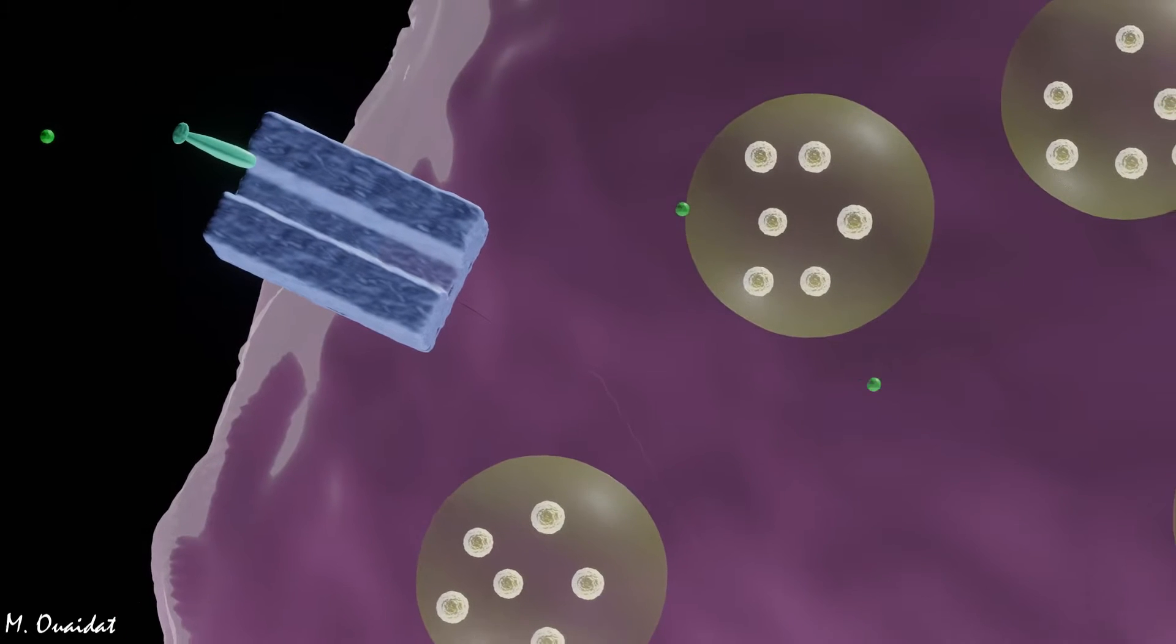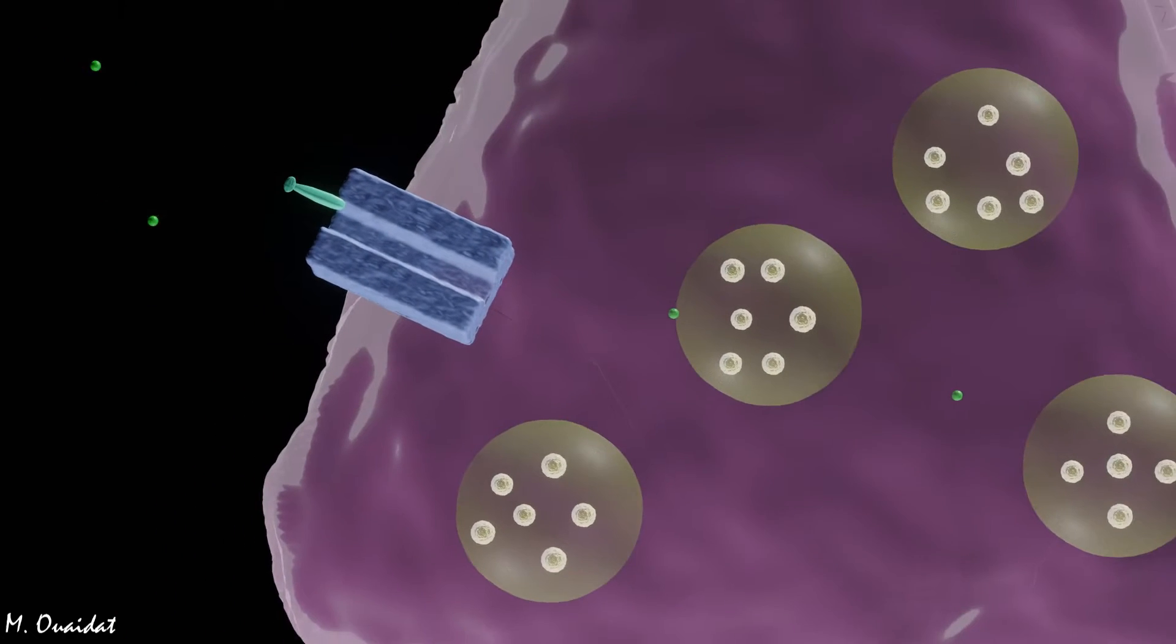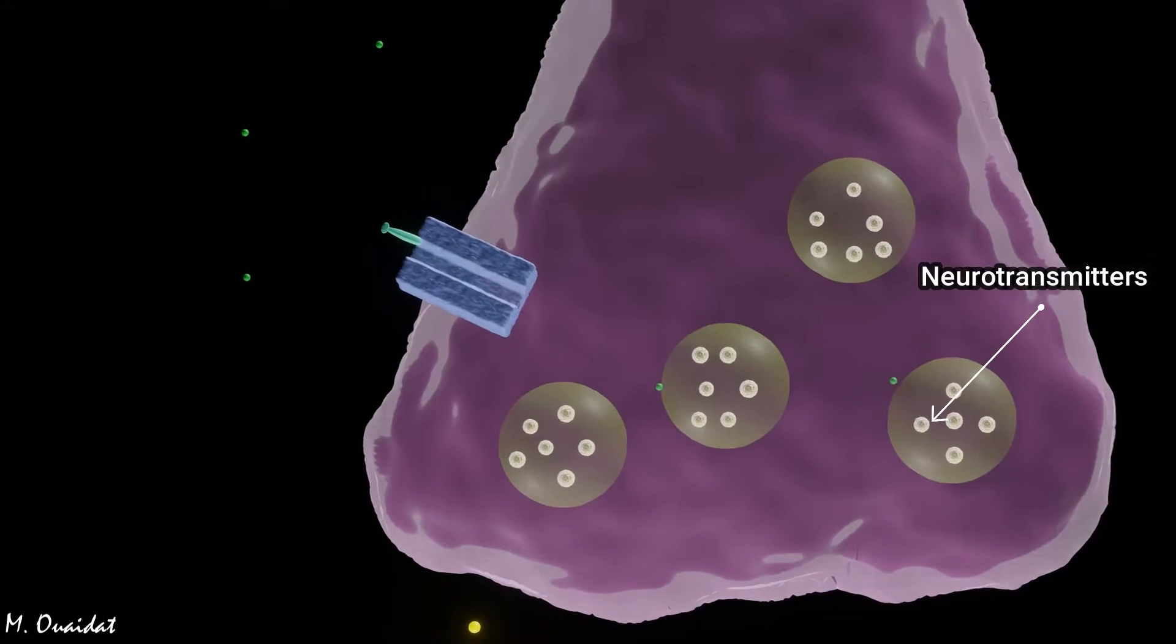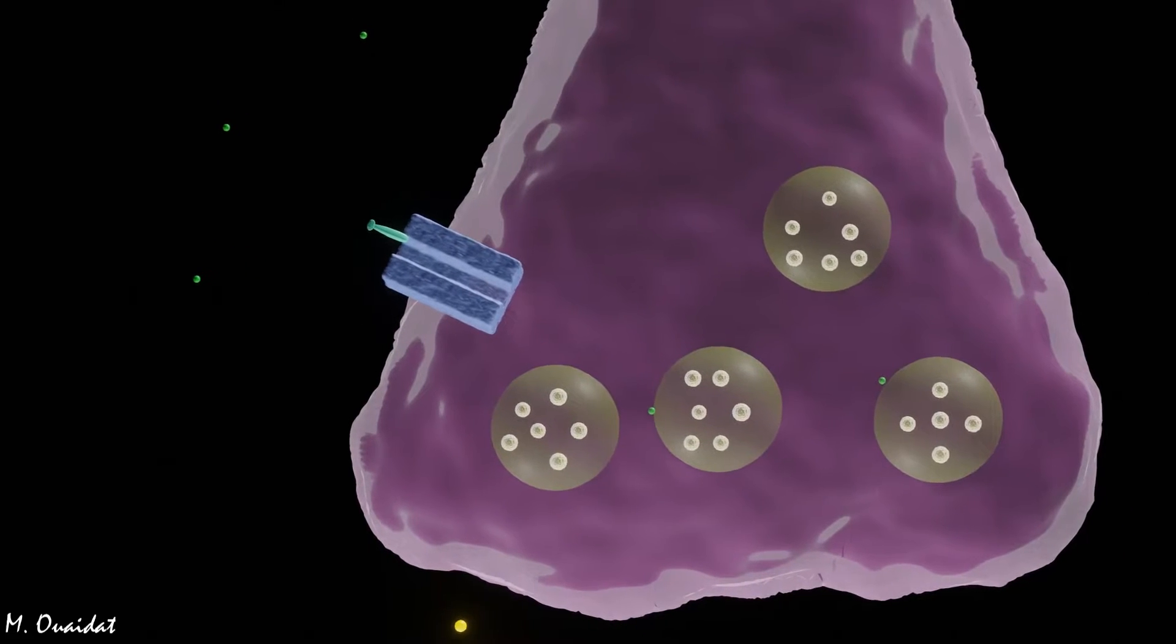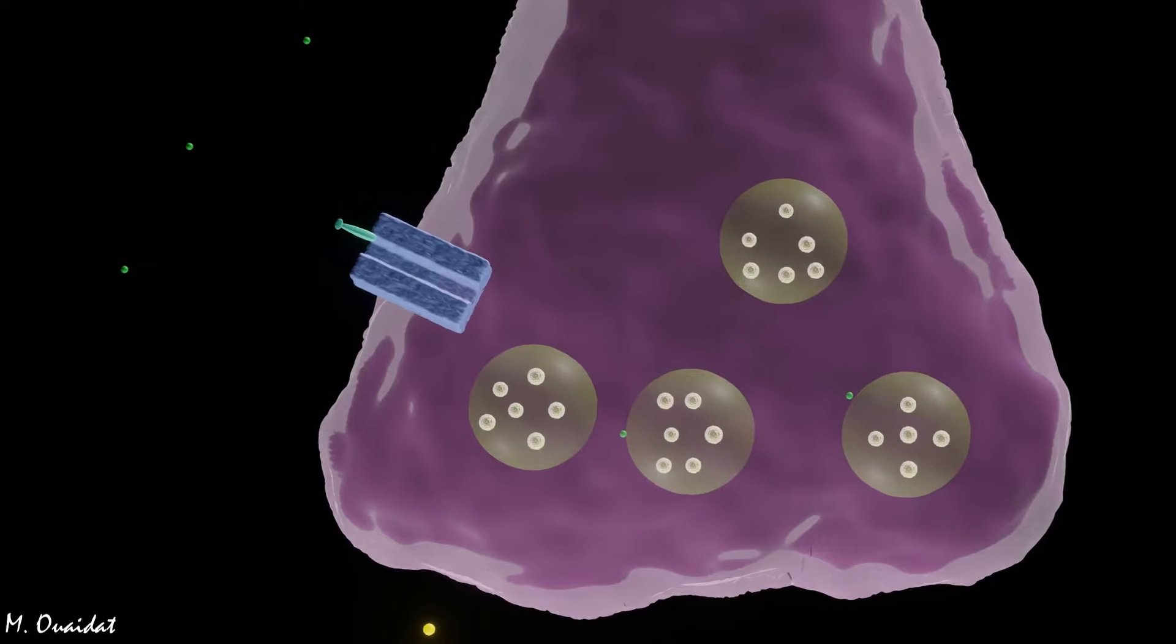When calcium binds to the vesicles which contain chemical secretions called neurotransmitters, the vesicles carry neurotransmitters toward the presynaptic membrane.